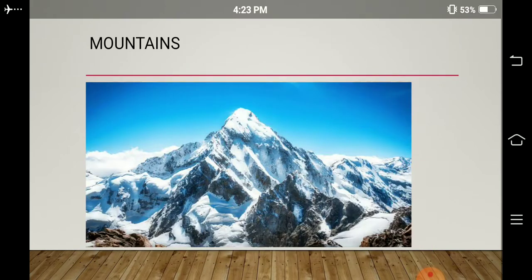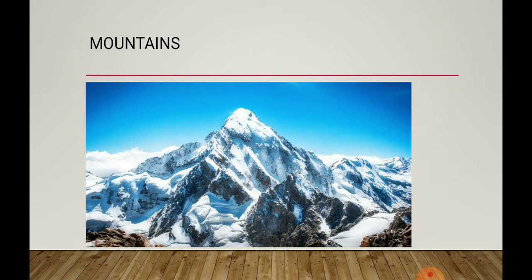Number 1: Mountains. Mountains are portions of the earth that rise steeply from the surrounding area. Mount Everest is the highest peak in the world.